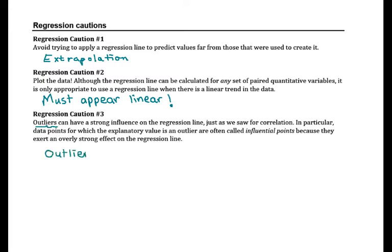If we have extreme outliers that have a lot of effect on the correlation or the slope, then we want to be cautious about any conclusions that we make from that model as well.